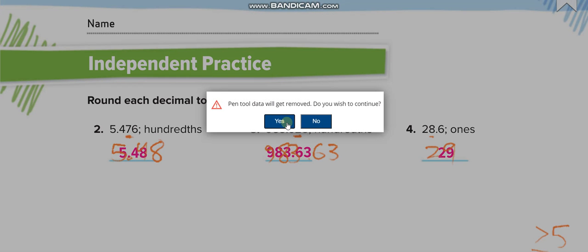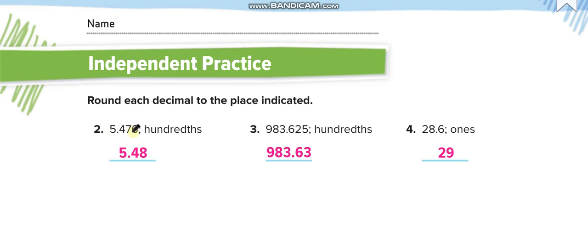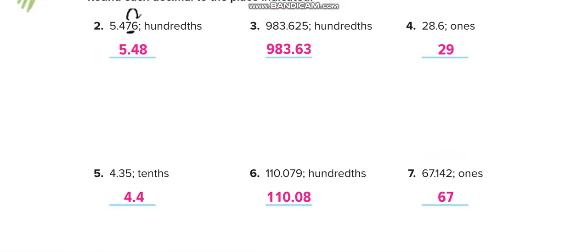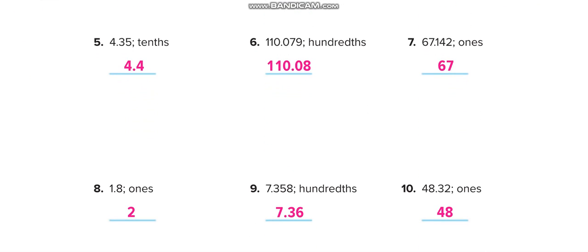Next page: independent practice. I will show you one question and you do the remaining ones yourself, then check your answers from this video. They give you a number and say the place value is hundredths — that is the 7. After underlining 7, you check the next number. It is more than five, so you add one to 7. The result is 5.480, or 5.48. All remaining questions you do the same way and match your answers through this video.